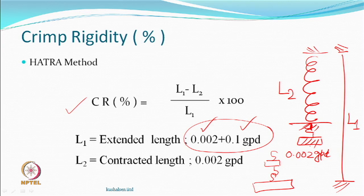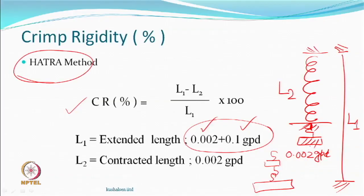Initially you hang both the total loads — which is the summation of the two loads — and then remove the heavy load and allow it to contract for a certain time, say one minute. Then you measure L2 and calculate crimp rigidity. Although one could have called it crimp recovery, the term rigidity has stayed because some rigidity within the so-called helical structure is responsible for it attaining this shape. This was called the HATRA method — HATRA stands for Hosiery and Allied Textile Research Associations — which originated in England. We should stop here, and next time we meet we will pick up from here and go further.